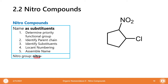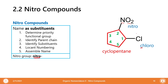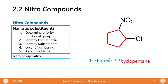The priority functional group in this case is still cyclopentane. We identify the substituents: we have a nitro group (NO2, one nitrogen, two oxygens) and chloro (chlorine). We do the numbering again — same situation as before. Chloro has a lower rank in alphabetization, so it gets the lower number as well. When we form the name: 1-chloro-2-nitrocyclopentane.